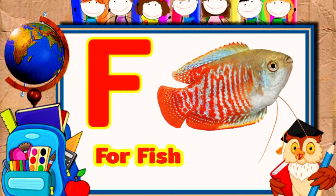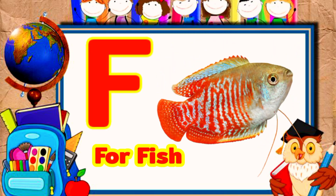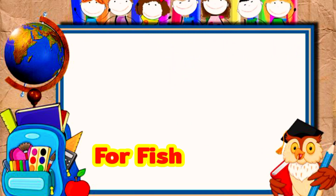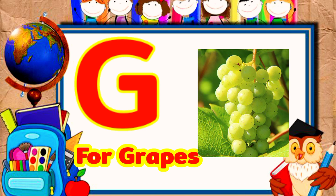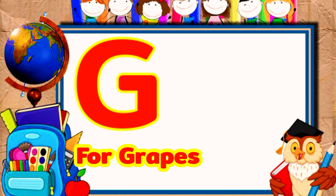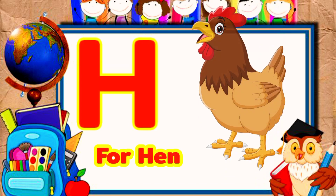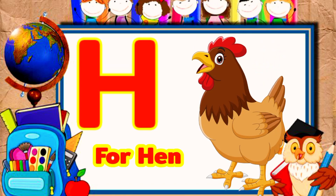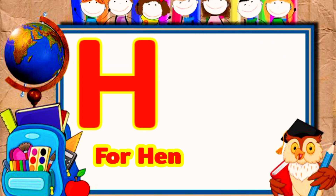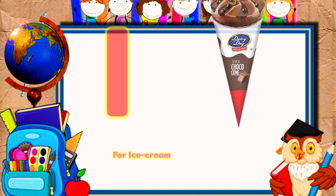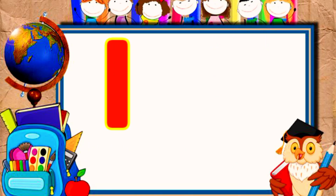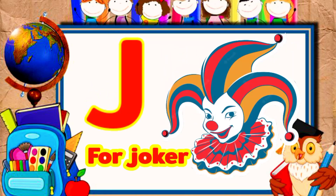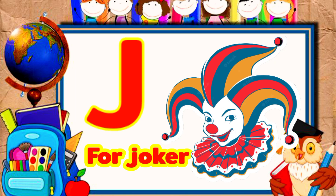F for fish, G for grass, F for head, I for ice cream, J for joker.